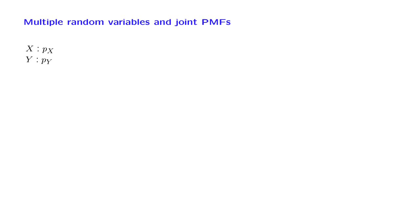By this point, we have discussed pretty much everything that is to be said about individual discrete random variables. Now, let us move to the case where we're dealing with multiple discrete random variables simultaneously, and talk about their distribution. As we will see, their distribution is characterized by a so-called joint PMF.